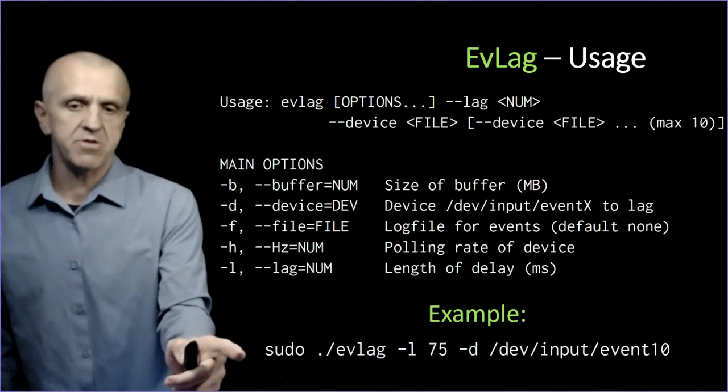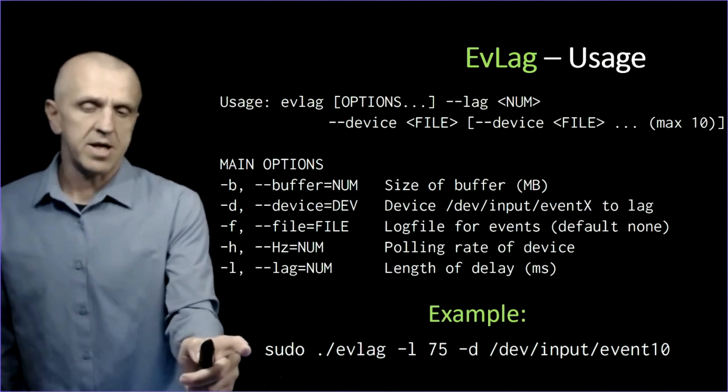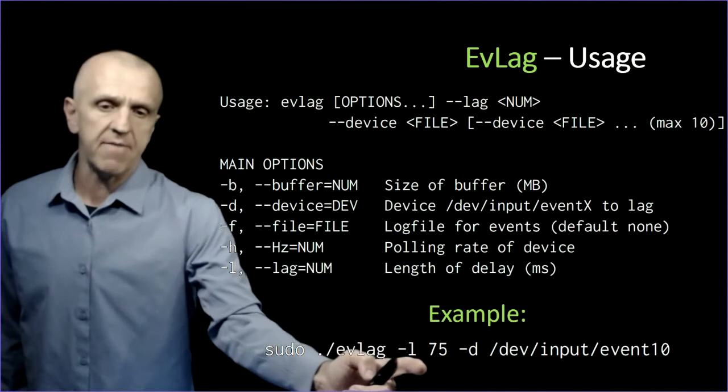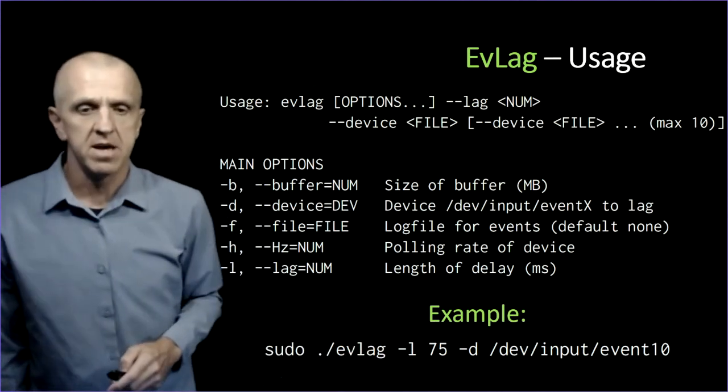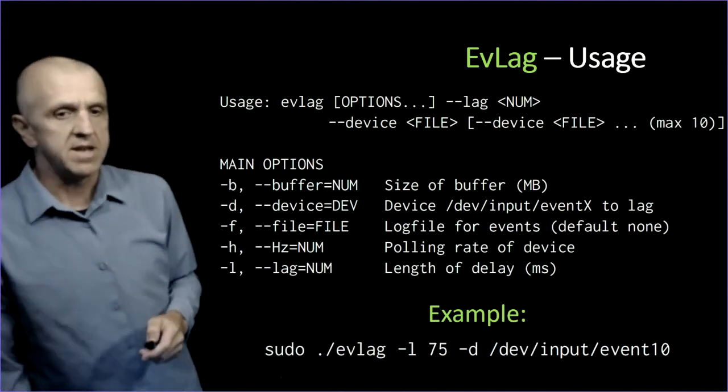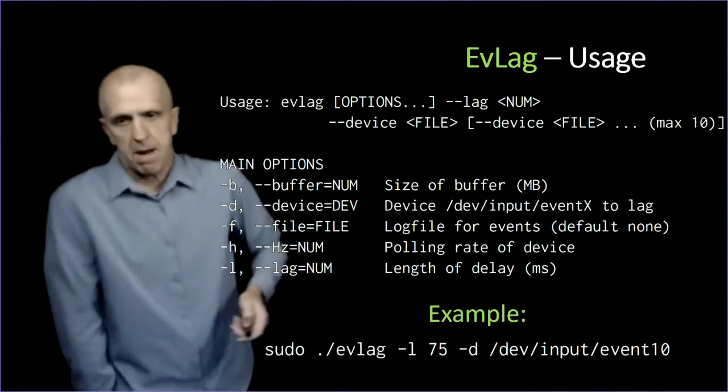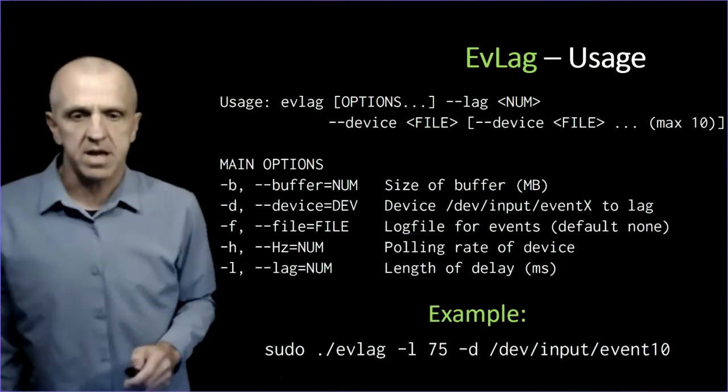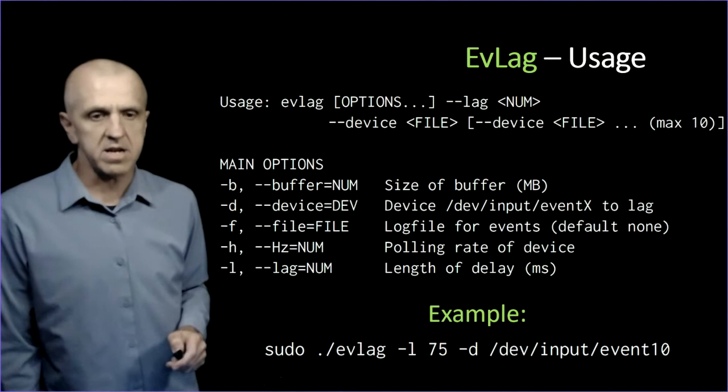As an example, you'd run it this way. You have to be root, administrator privileges to run. I'm running EvLag, giving it 75 milliseconds of latency. The device in this case is dev/input/event10, so it might be the mouse. This would add 75 milliseconds of latency to every mouse event.